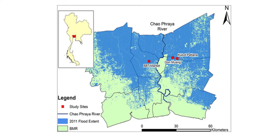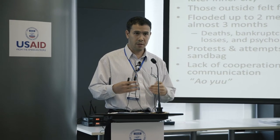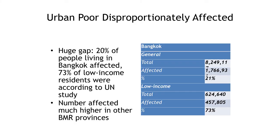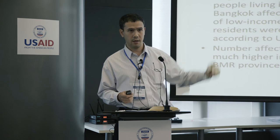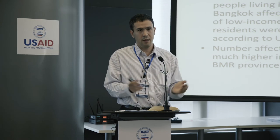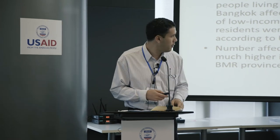A map of the flooding shows how Nonthaburi and Pathum Thani were so badly flooded while the inner area was not. There was also a lack of cooperation and communication — the governor and the prime minister were from different parties and had different priorities. The National Housing Administration found that 20% of people in Bangkok were affected, but also that 73% of low-income people were affected. This is because they live in the flooded areas in the north and northeast, on the lowest-lying land near canals, and have the lowest quality housing which cannot withstand flooding.